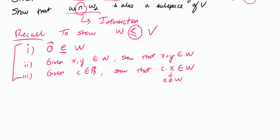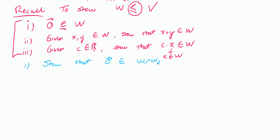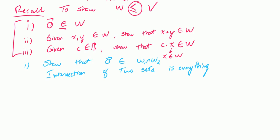Now we want to show that W1 intersect W2 is a subspace. Our first step is to show that the zero vector belongs to W1 intersect W2. To understand how, let's recall what an intersection means: the intersection of two sets is everything that those sets share in common.